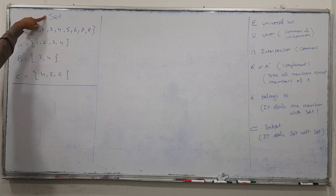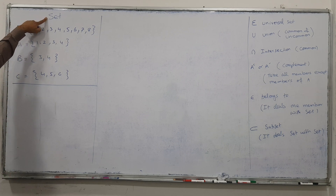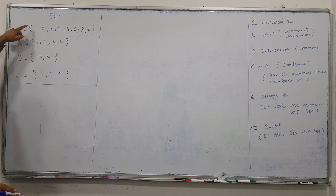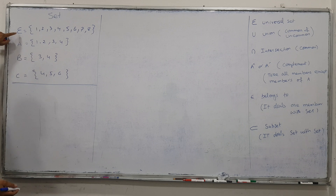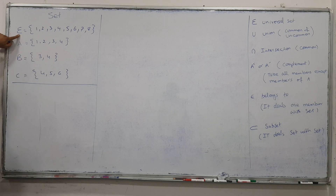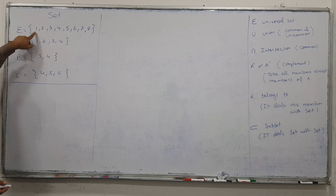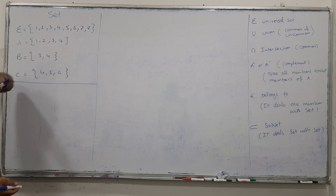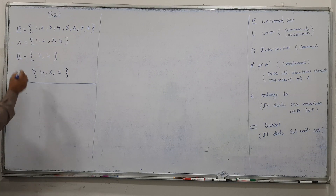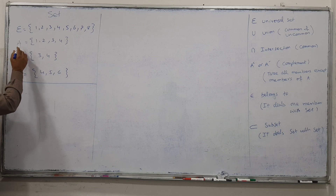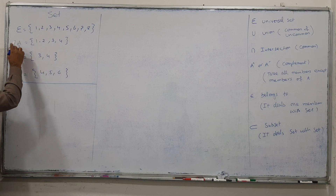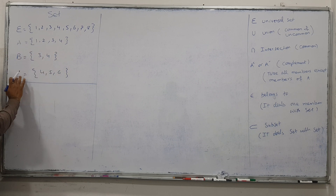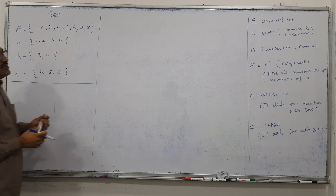So we have a concept here: sets. I make this one small example. Universal set has some members: 1, 2, 3, 4, 8. And we have set A with 4 members, and set B with members 3, 4, and this one.